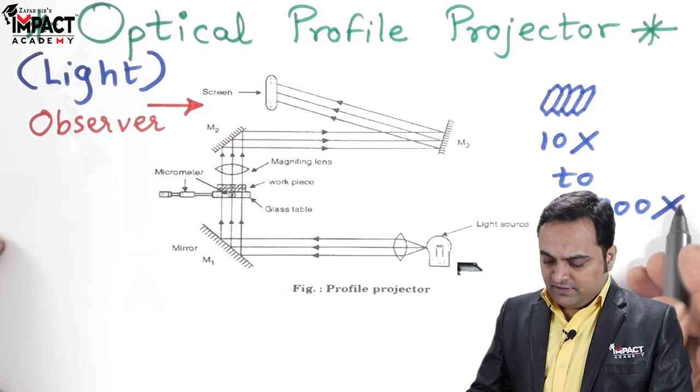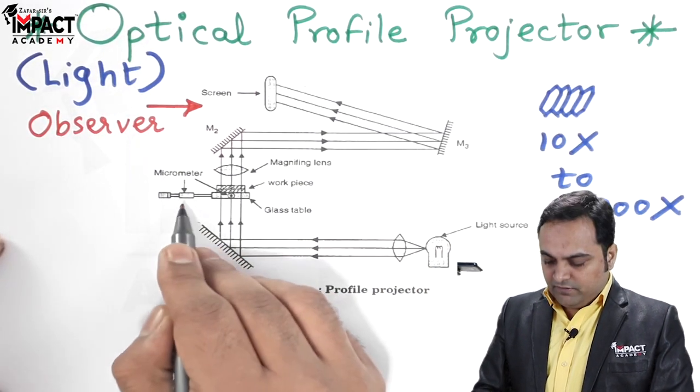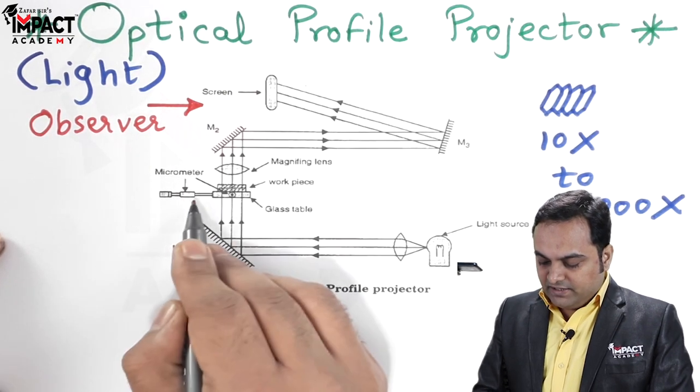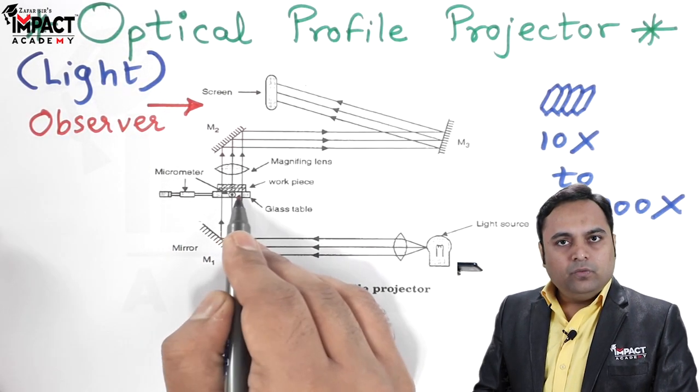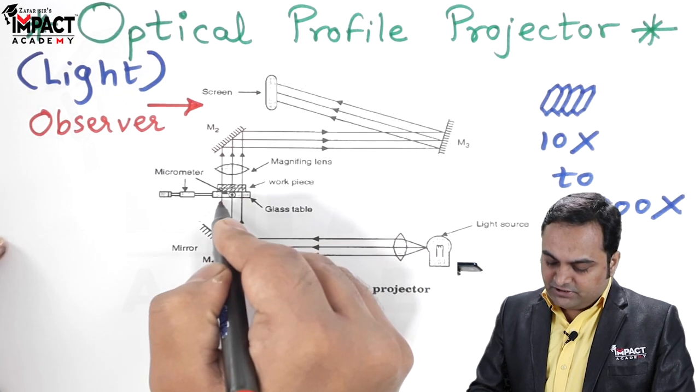The micrometer is also provided with the help of which we can adjust the table. We can adjust it in such a way that the object comes exactly in the line of the mirror.